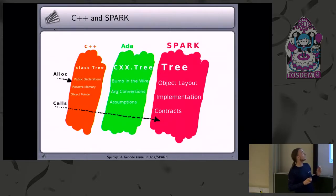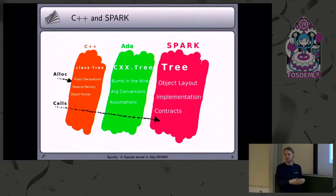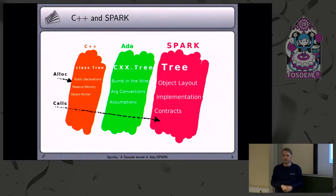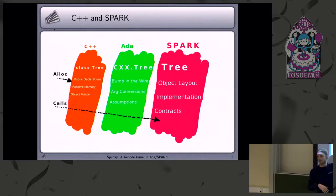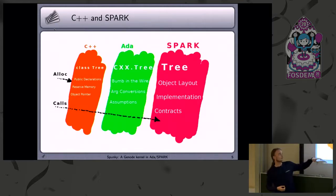This means you can have in your C++ world a class that is interchangeable — you can have a C++ implementation or a Spark implementation, and it doesn't matter for the C++ code; it doesn't even see this. And on the Spark side, I can do all my cool stuff with contracts without getting annoyed by the fact that it's actually allocated and called by the C++ side.